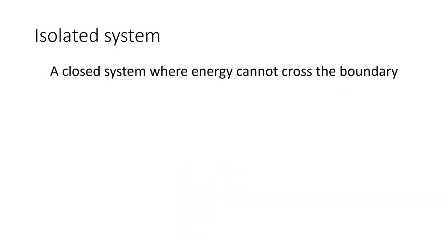Now, an isolated system is a closed system where energy cannot cross our system boundary. So we have, for example, a box of water, and it's totally insulated. So there's no energy flow.